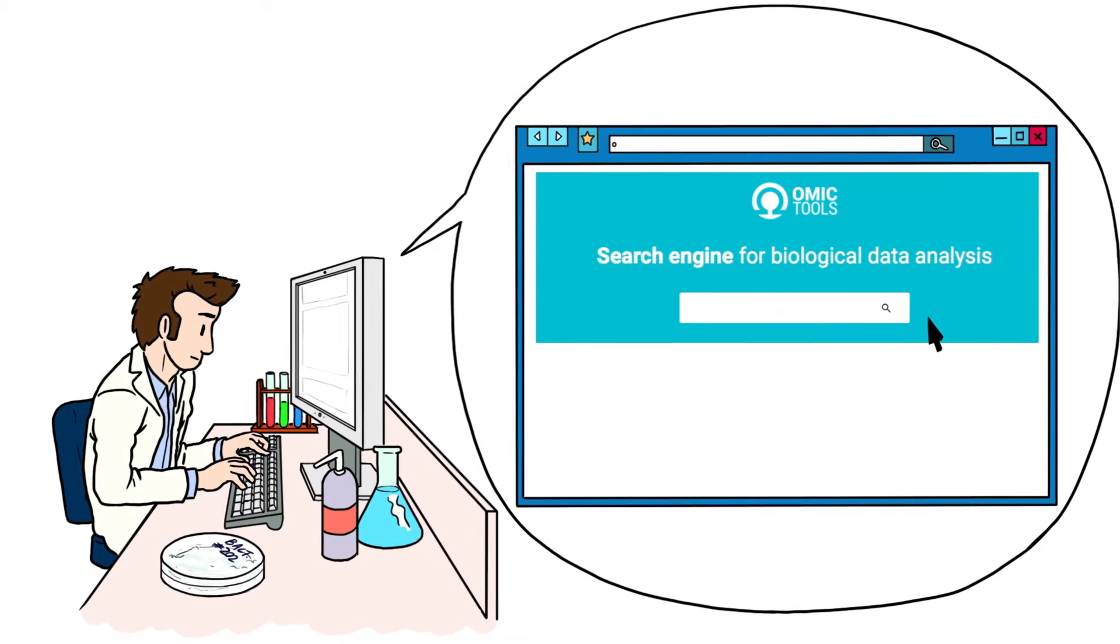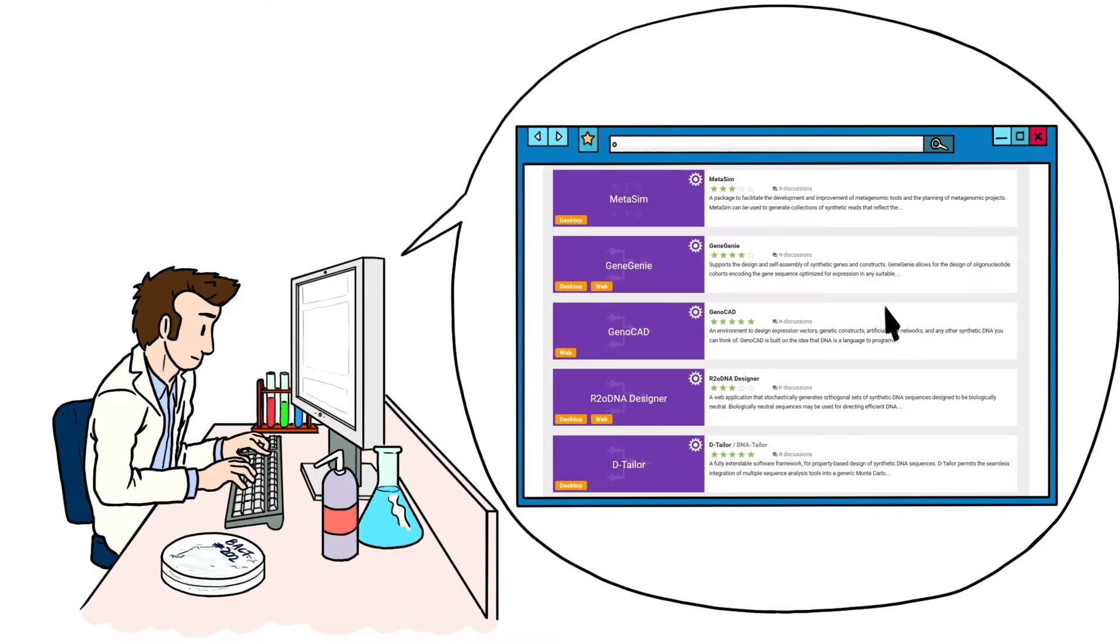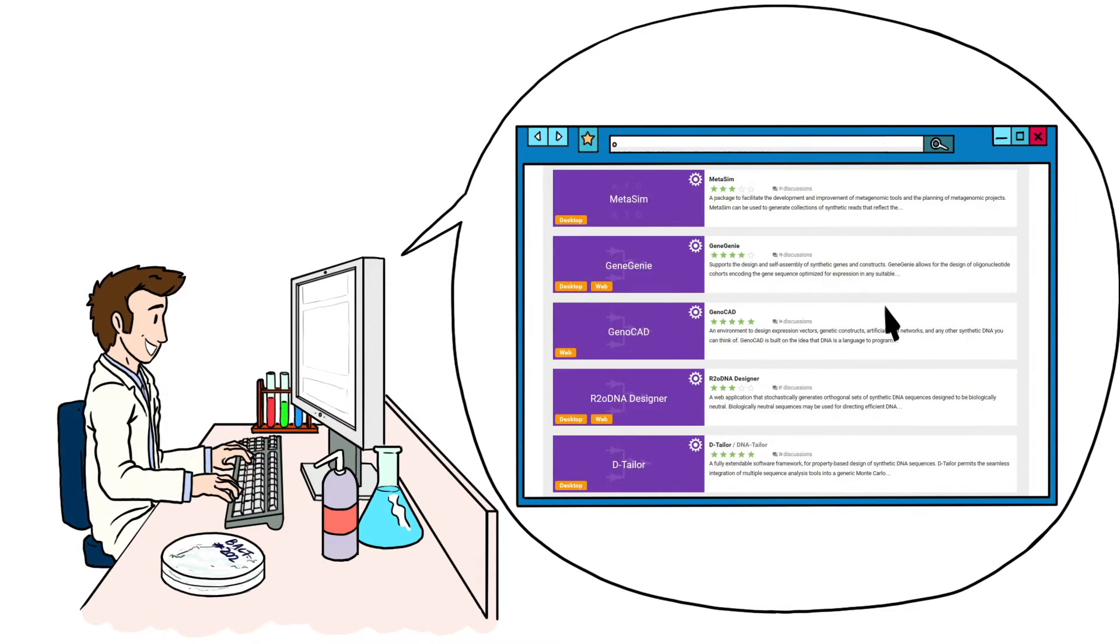So now Victor can submit his search, and Omic Tools will give him a personalized result based on what he needs and how much he knows about using the tools.